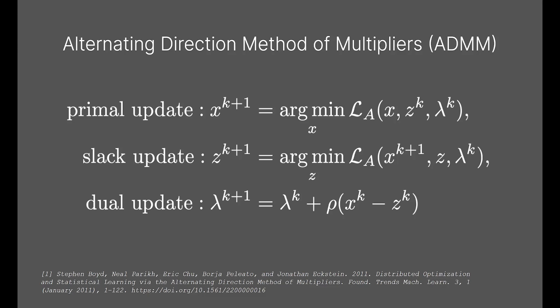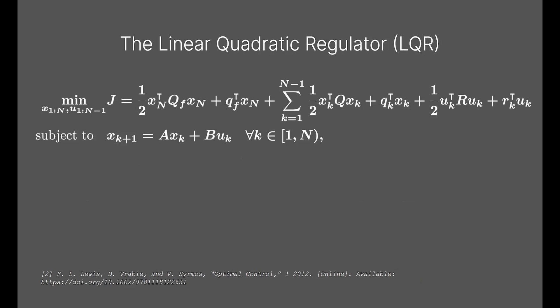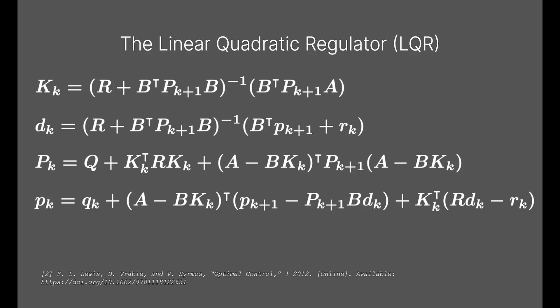Solving the linear system in the primal update is the most expensive part of each ADMM iteration. By exploiting the MPC problem structure, this step becomes the solution to an LQR problem, where K and d are the optimal feedback gain and feedforward term for a given time step, and are computed using Riccati recursion.